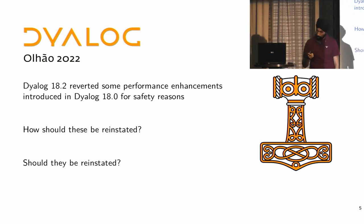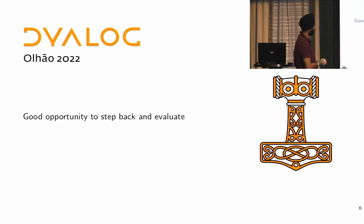Dyalog 18.0 also leads us to ask a few supplemental questions as well. As is hopefully well known to everybody here, some of the performance improvements that were in Dyalog 18.0 we removed in 18.2 as a precaution because it was later reported to us that some of the code was sometimes incorrectly calculating results. So, we have two important questions. How do we go about the process of reintroducing those performance enhancements? And should we even reintroduce those?